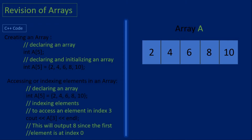For arrays, we can also access specific items or elements using an index. From the array we created, let's access the value at index three. Keep in mind that in C++ the index values for an array start at zero and not at one, so the item at index three is the number eight.